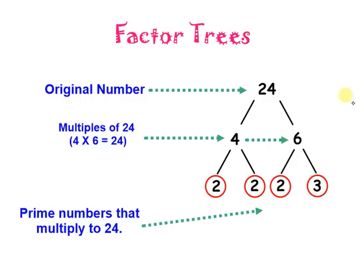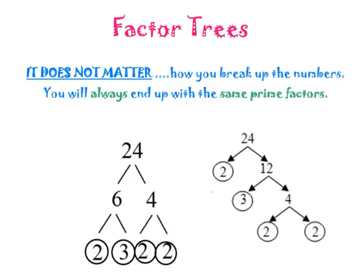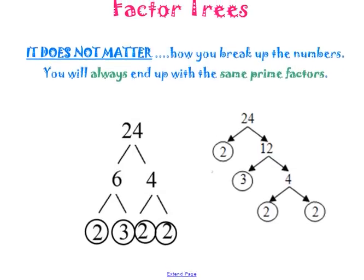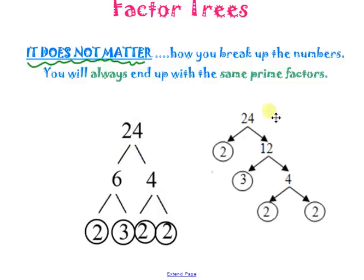You can pause the video if you need to look at that a little longer. Here's the thing with prime factorization: it really does not matter how you break up the numbers, because as long as they all multiply back together properly, you'll end up with the correct answer. Here's another way to break up 24: 2 times 12 is 24, and 2 is prime.